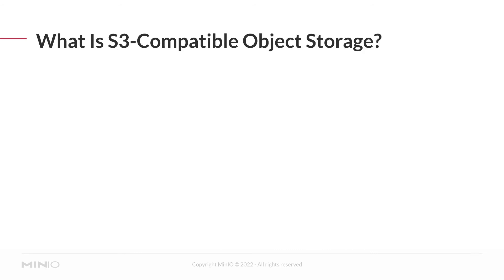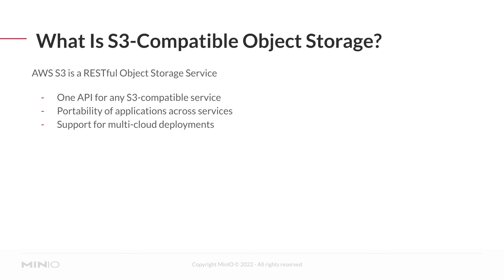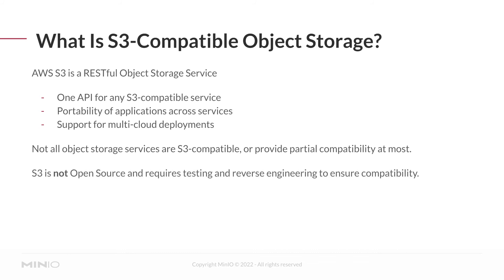We're going to be talking about S3 compatibility during this module. S3 refers to AWS Simple Storage Service — a RESTful object storage service and one API that any S3 compatible service can attempt to implement. This gives you portability of applications: if your application relies on the S3 API, you can generally use it to move across object storage resources, and it provides inherent support for multi-cloud deployments. However, not all object storage services are S3 compatible — some provide only partial compatibility. Furthermore, S3 is not open source; the API is public, but implementation details require testing and reverse engineering to ensure actual compatibility.